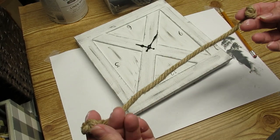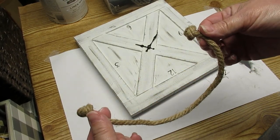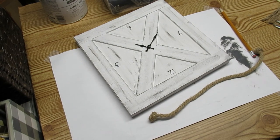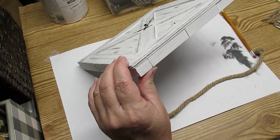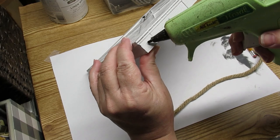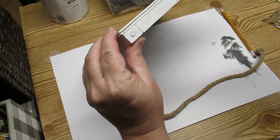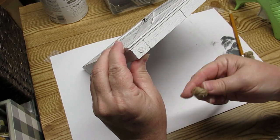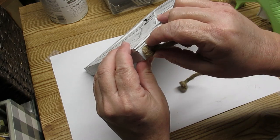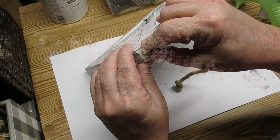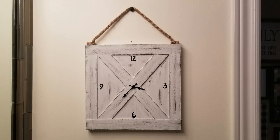The last thing my barn door clock needs is a hanger. I decided to take a piece of nautical rope, I tied a knot in each end, cut off the excess and then hot glued it into place. I decided to replace the clock in my bathroom with this barn door clock and I am in love. I hope you like it too.